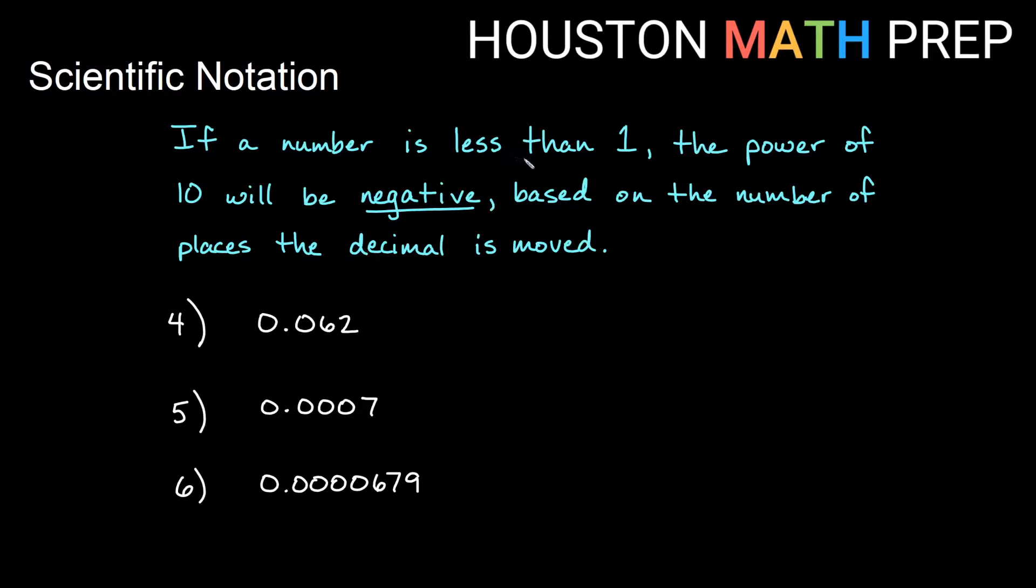If we look at numbers that are small, in other words numbers less than 1, the power of 10 will be negative, based on the number of places the decimal is moved. We'll be moving the decimal in the opposite direction, so we get negative powers of 10.